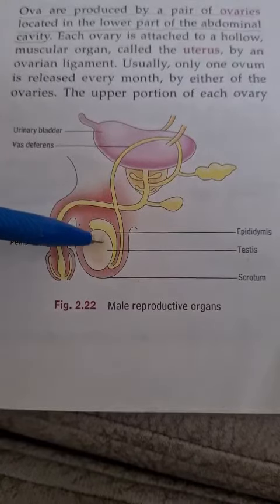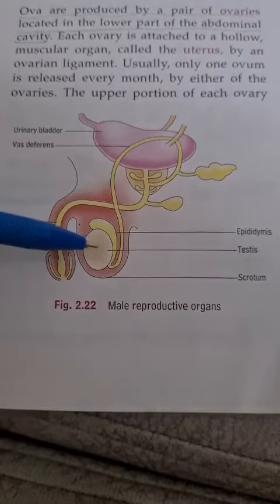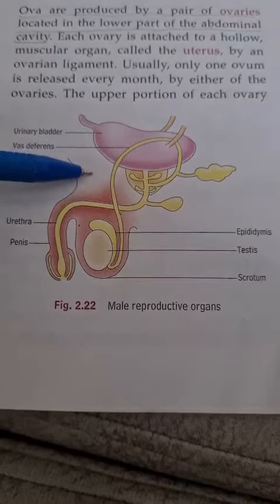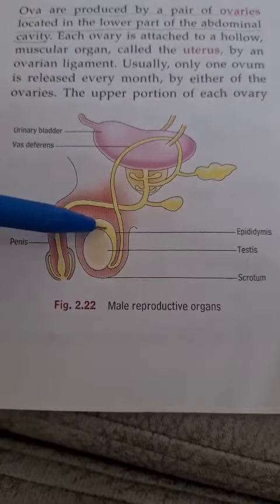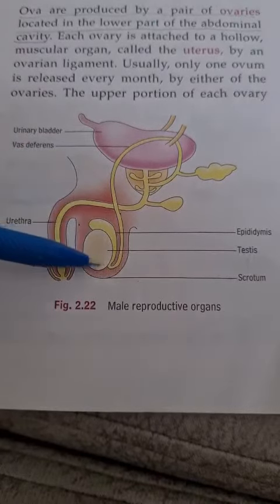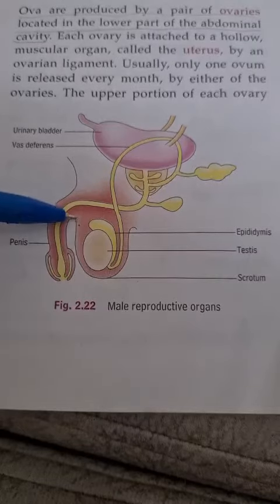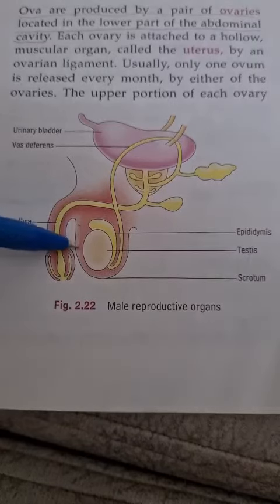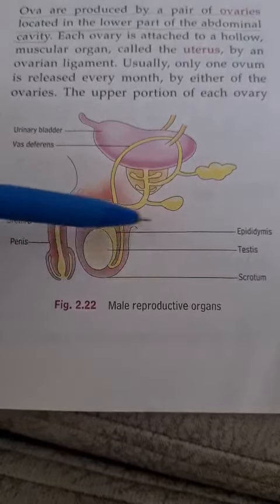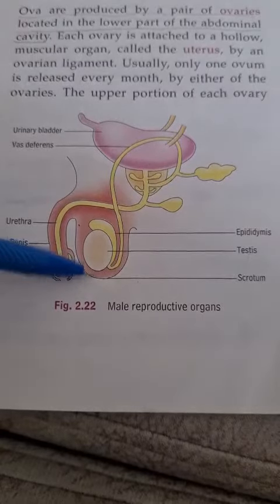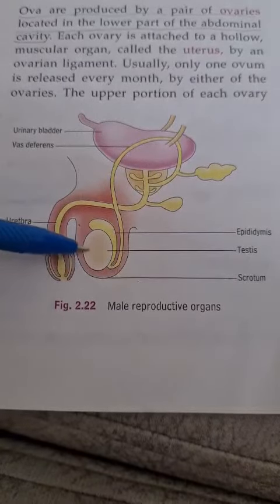These testes are present outside the abdominal cavity. Testes are present outside the abdominal cavity inside one membranous sac-like covering which is called the scrotum. Inside the scrotum, these oval-shaped testes are present.